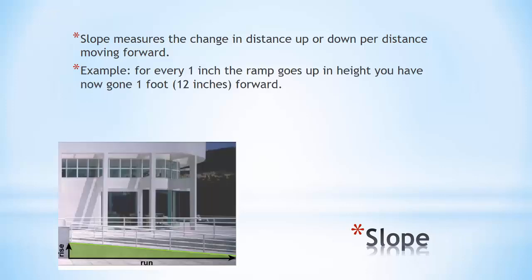Slope measures the change in distance up or down per distance moving forward. For example, with this wheelchair ramp in the picture, for every one inch the ramp goes up in height, you've now gone one foot or 12 inches forward, and that's how we get our measurement.